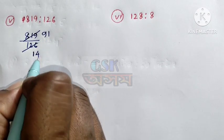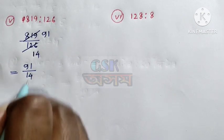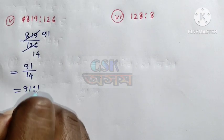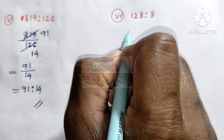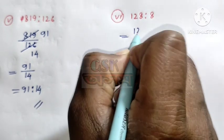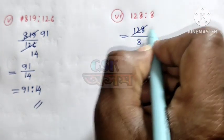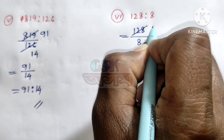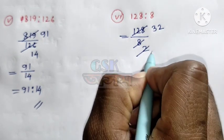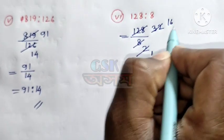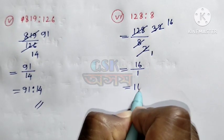This is equal to 1. We will give it to 1. 91 is to 14. 91 is to 14. Next, 128 is to 8. This is 128 divided by 8. 128 is to 8. 12 is to 12. 16 is to 12.